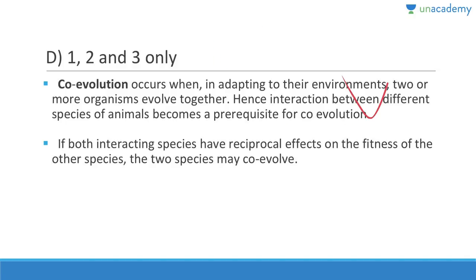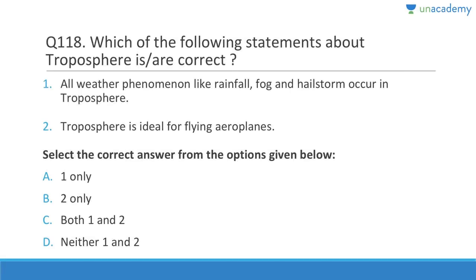Co-evolution occurs when two or more species adapt to each other's environments and reciprocally affect each other's fitness. If both interacting species have reciprocal effects on the fitness of the other, the two species may co-evolve.